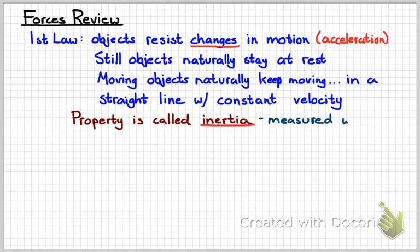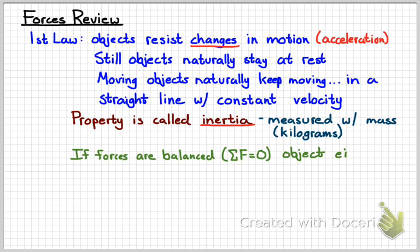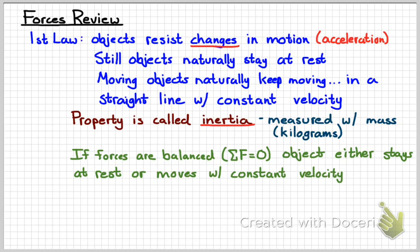All objects have inertia, and the way that we measure the inertia is with the mass. Remember that we use the kilogram as our unit of mass in physics. So if the forces on an object are balanced, meaning that the net force is zero, then the object is either going to stay at rest or it's going to keep moving in the direction it was already moving with a constant velocity in a straight line. So the first law of motion is often referred to as the law of inertia.